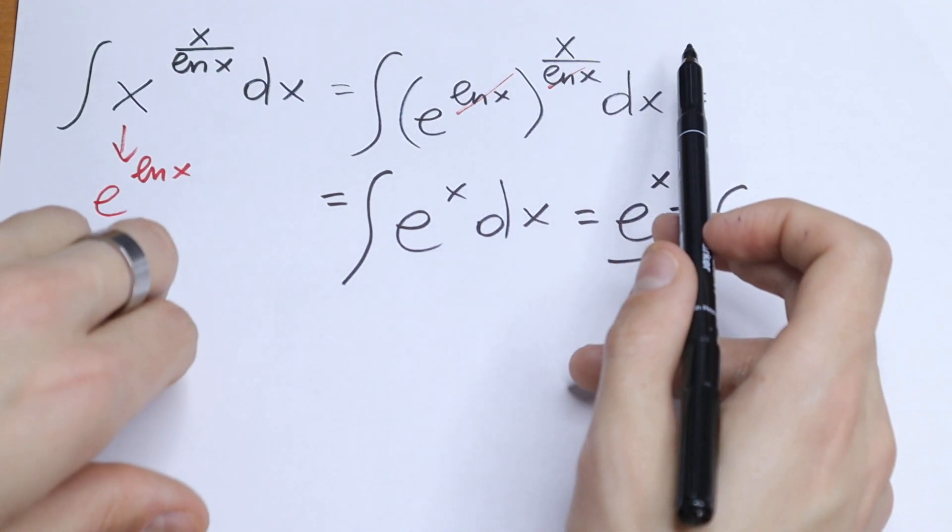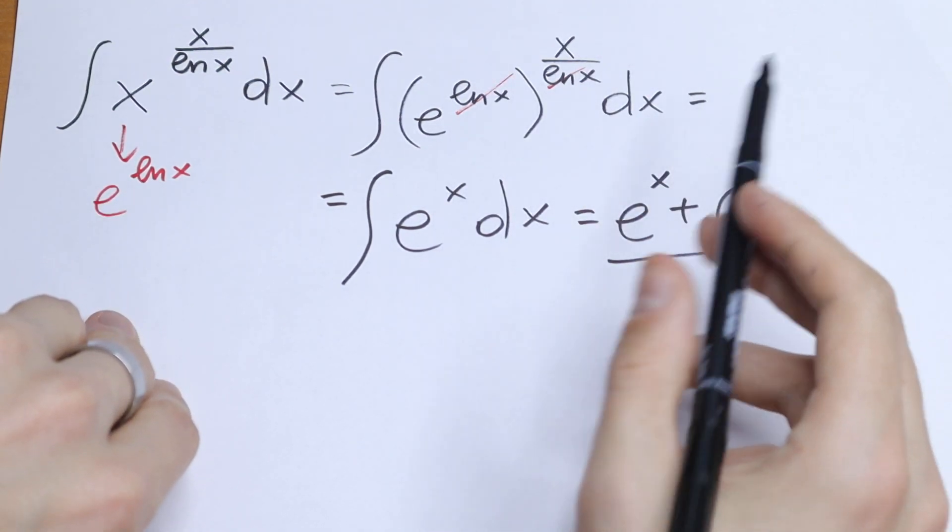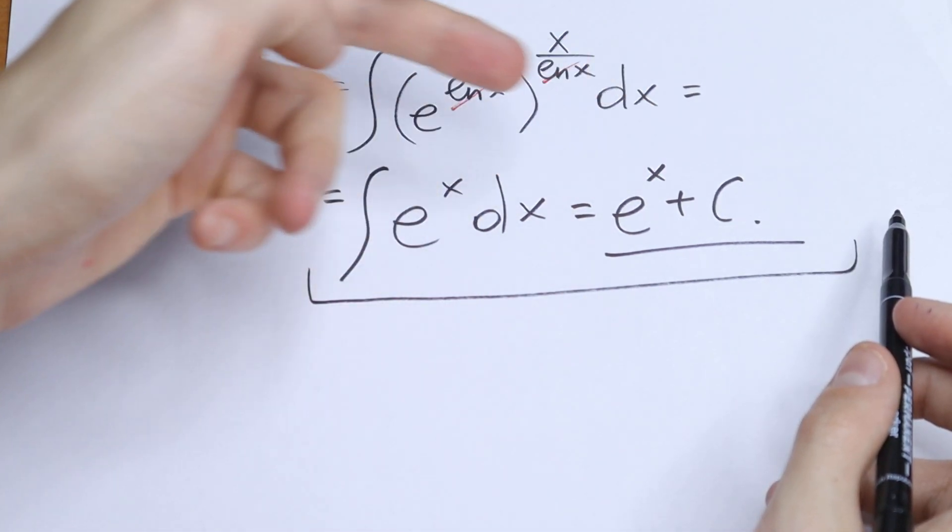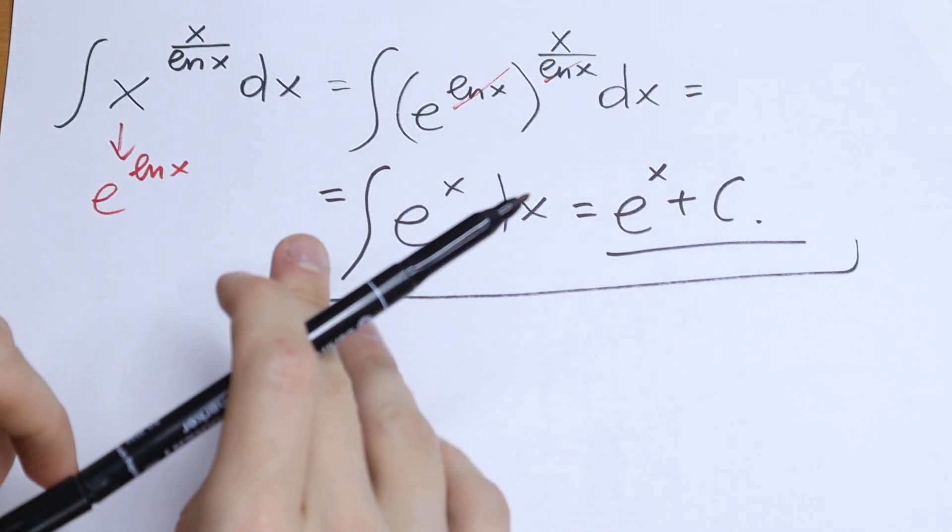As you can see, this natural log we can cancel and as a result we will have our classic case. This will be equal to e to the power x plus c.